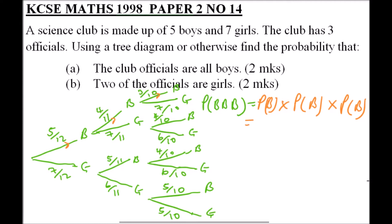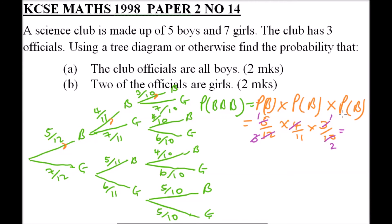We have 5 over 12, multiplied by 4 over 11, multiplied by 3 over 10. We simplify: 12 divided by 4 gives 3, and 3 divided by 3 disappears — giving 1. Then 5, 1, and 2 remain. This gives us 1 over 22 — that is, 1 × 1 × 1 over 11 × 2 = 22. So the probability that all officials are boys is 1/22.